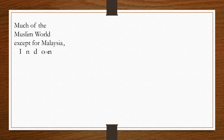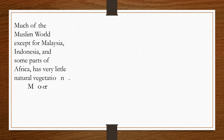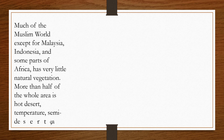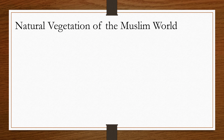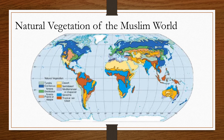Natural vegetation of the Muslim world. Much of the Muslim world, except for Malaysia, Indonesia, and some parts of Africa, has very little natural vegetation. More than half of the whole area is hot desert, temperature, semi-desert, and scrub. In these desert areas, apart from a few oases, little or nothing grows except very hardy plants which can survive in such harsh conditions. These can provide food only for the hardiest sheep and goats, usually kept by nomadic or semi-nomadic people who wander with their flocks and herds in search of pasture.